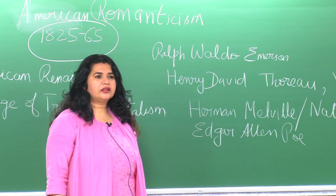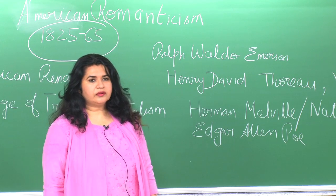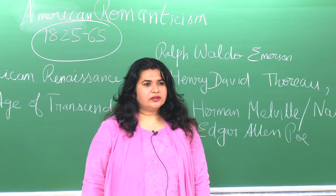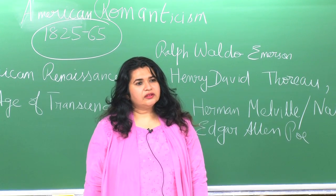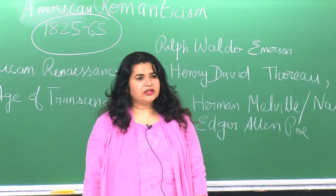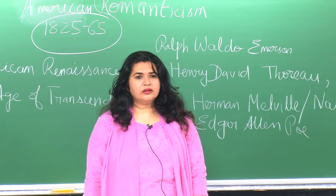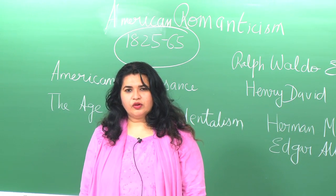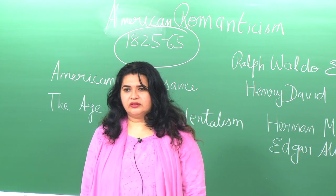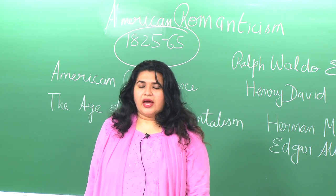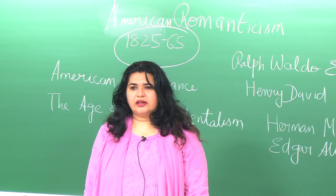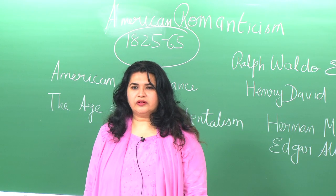If we look at the key distinctions between the age of reason and Romanticism, the age of reason is all about rationality, control, conformity, order, and it is quite mechanical. On the other hand, Romanticism is all about imagination, expression of individuality, spontaneity, and it is also extremely organic, as opposed to the mechanical aspect of the age of reason.